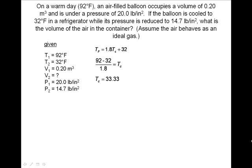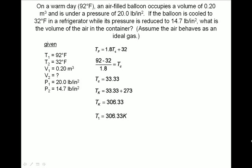Now that we have TC, we will use our conversion to get it into Kelvin. We add 273 to our Celsius temperature, and we have our temperature in Kelvin. So T1 equals 306.33 Kelvin, and T2 equals 273 Kelvin.